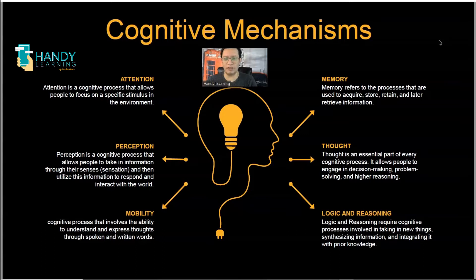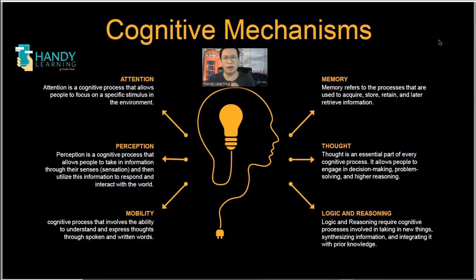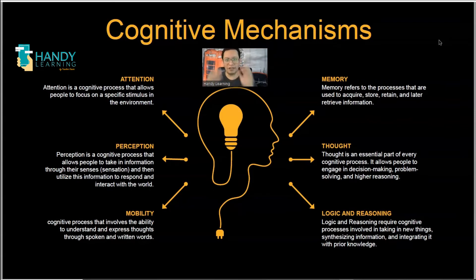Perception is a cognitive process that allows people to take in information using their senses. When we perceive information, we can do it through our visual, our auditory, or also through movement and different things that are happening around us. Through our senses, we are perceiving information, and that will become perception because it may influence the concepts that we receive and also remember. Attention is a cognitive process that allows people to focus on a specific stimulus in the environment — in this case, this PDF and this video.